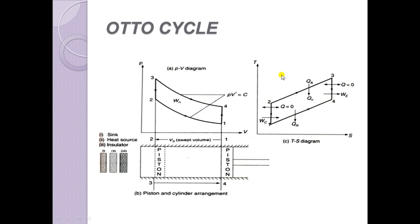With the help of PV and TS diagrams, we are going to see how the Otto cycle works. A heat source, a heat sink, and an insulator are used here, which are alternatively brought in contact with the cylinder head. The piston is made to move from position 1 to position 2 inwardly, and from position 3 to position 4 outwardly.